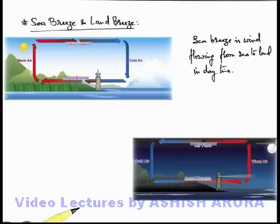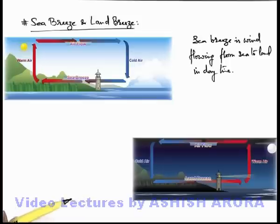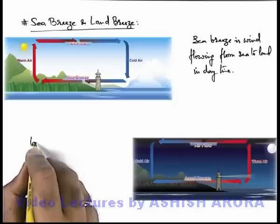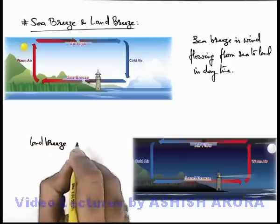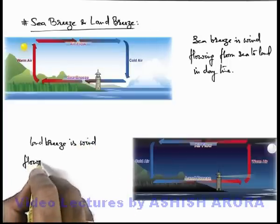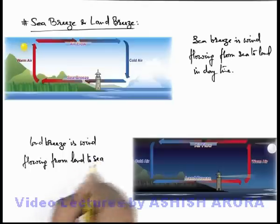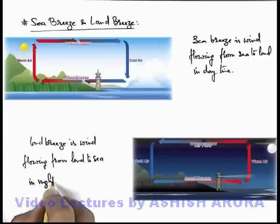Again at higher altitude, the pressure above the sea level is high compared to the pressure above the land level, because due to the flow of land breeze the air at higher altitude travels in a downward direction. So here also a convection current setup exists, that is from land to sea on the surface of earth. Land breeze is the wind flowing from land to sea in nights.